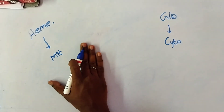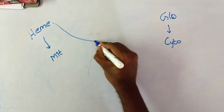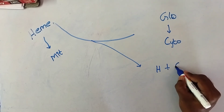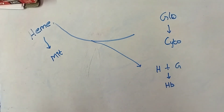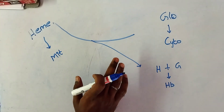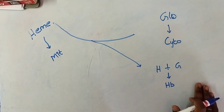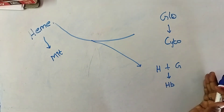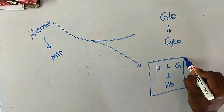Heme is present in the mitochondria and globin is synthesized in the cytoplasm. Heme is transported into the cytoplasm, where it combines with globin. Heme plus globin forms hemoglobin. Some steps of heme synthesis also occur in the cytoplasm. This is how the synthesis of hemoglobin takes place.